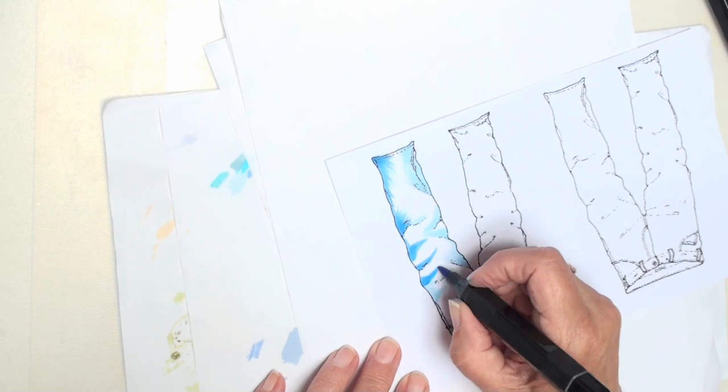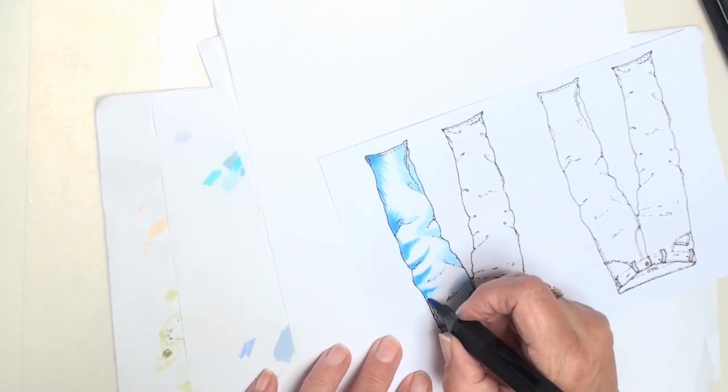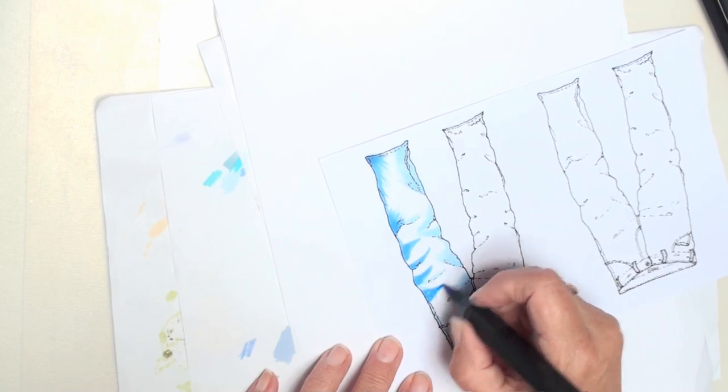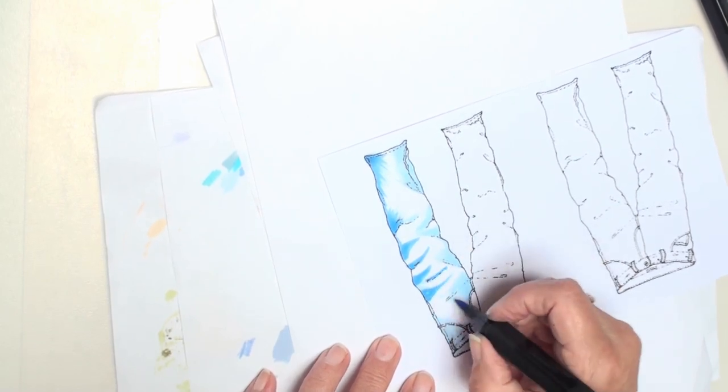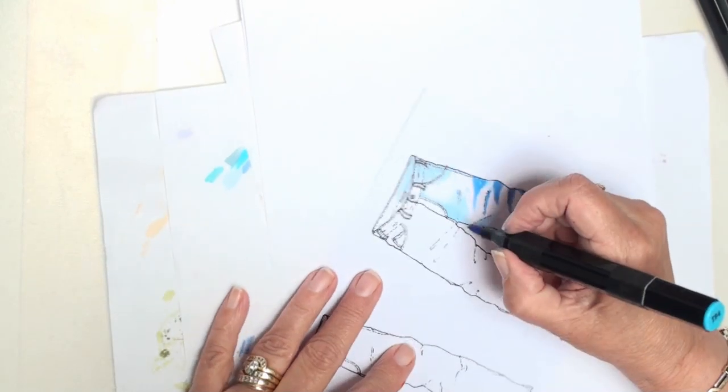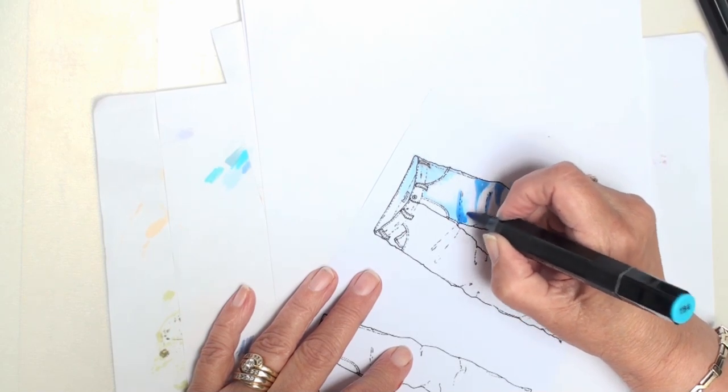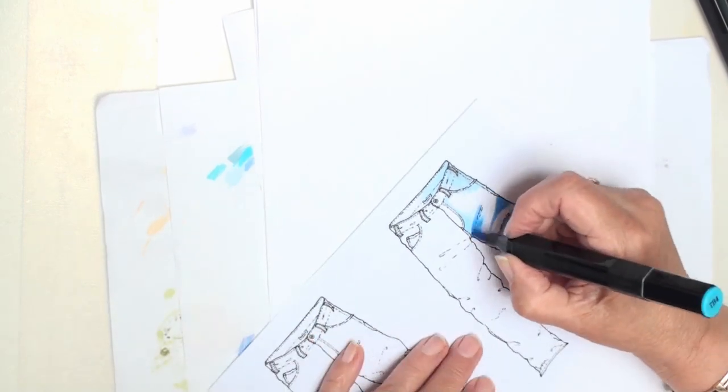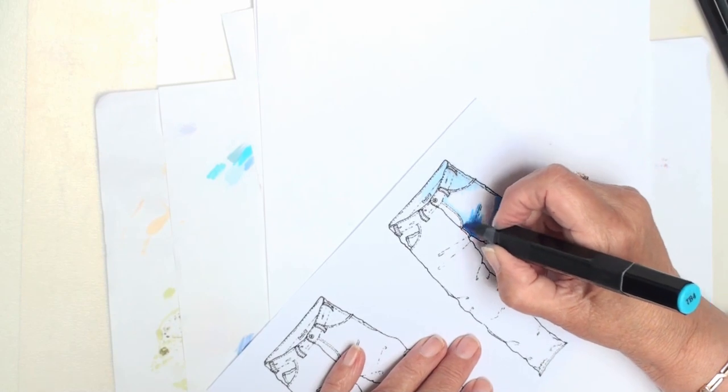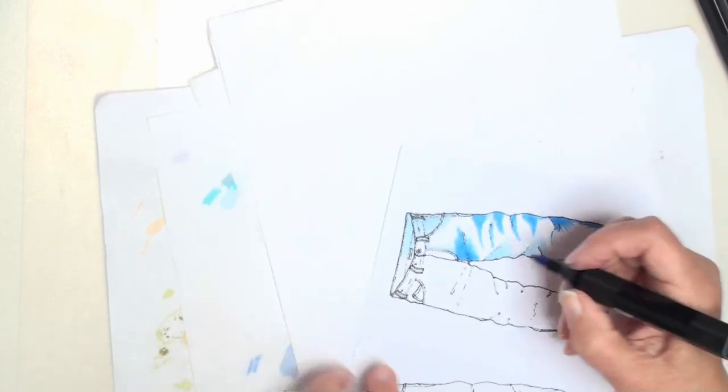Now where you've got bumps in the fabric is usually where there would be a fold. So I'm going to turn it round and come and work on this side. So again just flicking the color out. You tend not to put as much ink down when you flick the nibs.